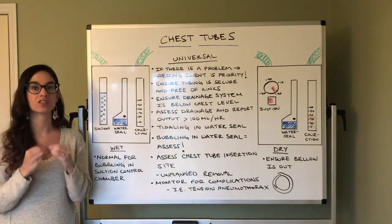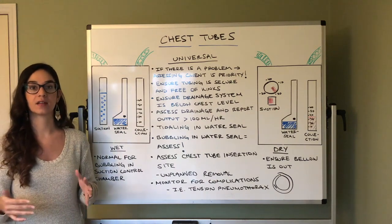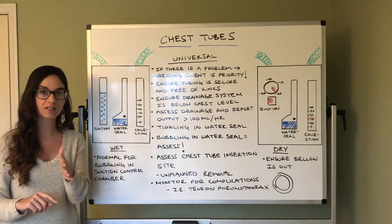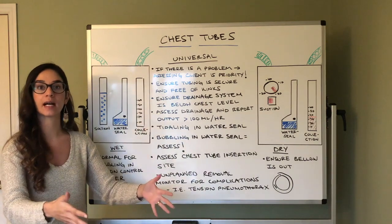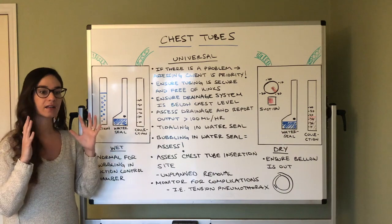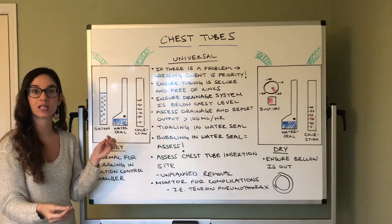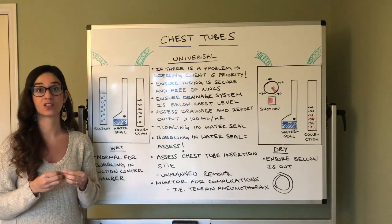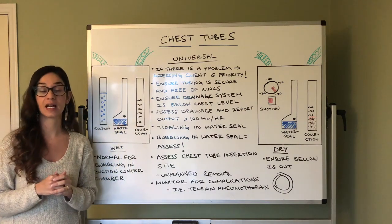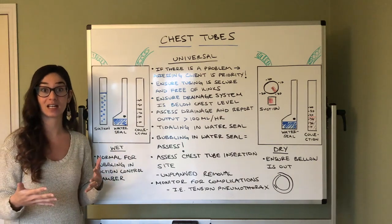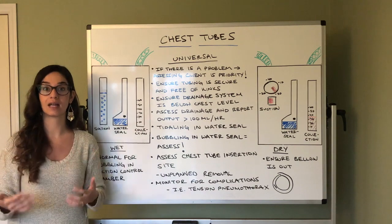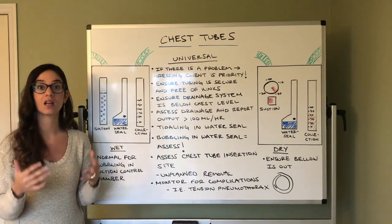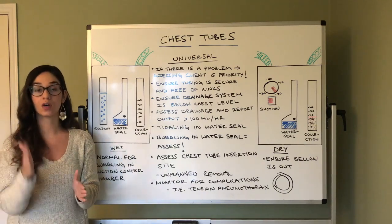In NCLEX style questions about prioritization — if you see 'what do you do first?' or 'what is priority?' — I want you to understand: if you ever have a concern that something could be wrong, your first priority is to go to your client. This is a device, a tool. If you have a problem, your priority is to ensure respiratory functioning. Inspect chest rise and fall, auscultate breath sounds, ensure that air is moving. If there is ever a concern in your NCLEX style question, go and assess your client first.